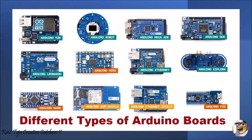There are many varieties of Arduino boards: Arduino UNO, Arduino Robot, Arduino Mega, Arduino Due, Arduino Leonardo, Arduino Mini, Arduino Ethernet, Arduino Explorer, Arduino Nano, Arduino GSM Shield, Arduino Ethernet Shield, and Arduino FIO. All are different types of development boards with an onboard microcontroller, very easy to use, and come with several varieties of features like inbuilt GSM, inbuilt Wi-Fi, or compact size — suitable for designing various types of applications.